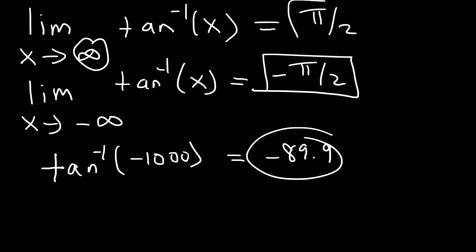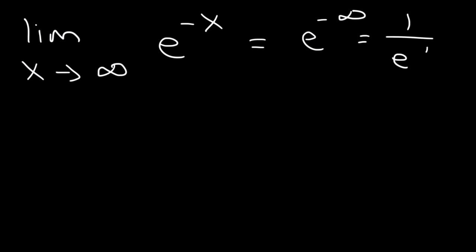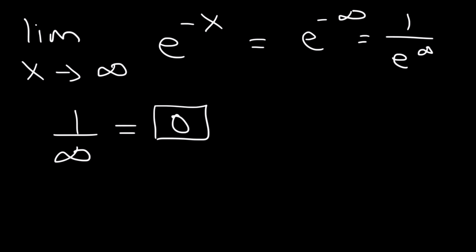There's one more that we need to go over. What is the limit as x approaches infinity of e to the negative x? If we plug in infinity, this is e to the negative infinity, which is 1 over e to the infinity. e to the infinity is infinity, and 1 divided by infinity is 0. So as x approaches infinity for this graph, it's going to be 0.